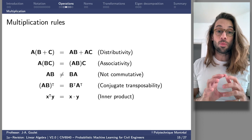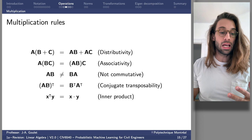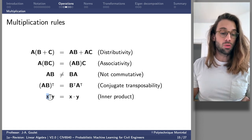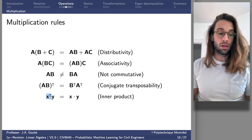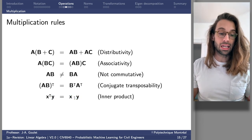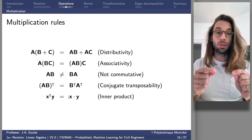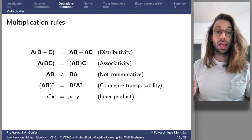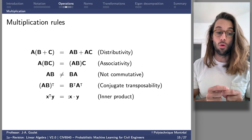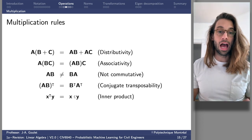You can take the inner product of vectors. X transpose — a row vector — times a column vector Y equals the dot product X · Y. The dot product means I multiply element by element all the terms in X and Y, then sum them over. X transpose Y and the dot product have the same meaning.